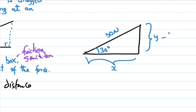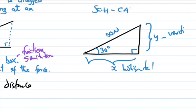We have angle 30 degrees and 15 newtons. We have the x-axis and the y-axis. The y-axis is vertical and the x-axis is horizontal. Since this is a right-angle triangle, we are going to apply trigonometry. The x-component is our adjacent side and the hypotenuse is the applied force. So to find x we are going to use cosine.